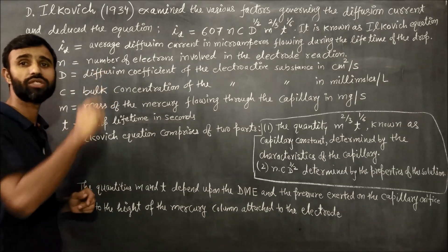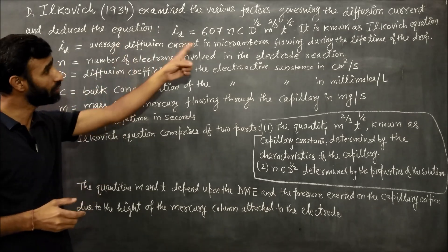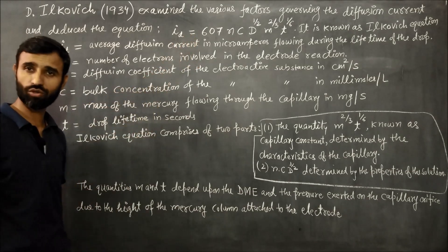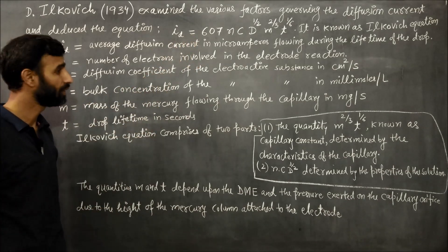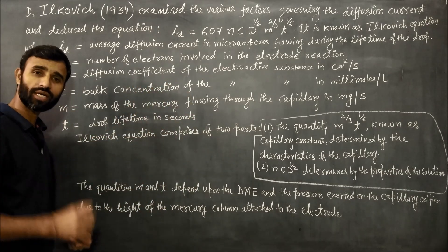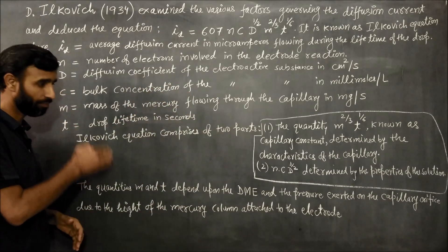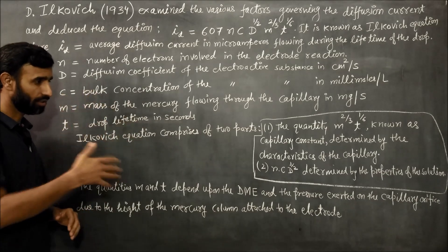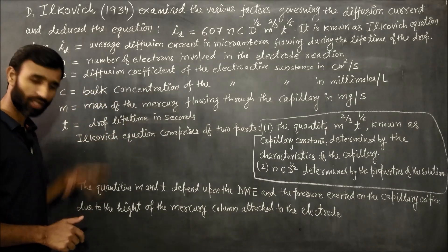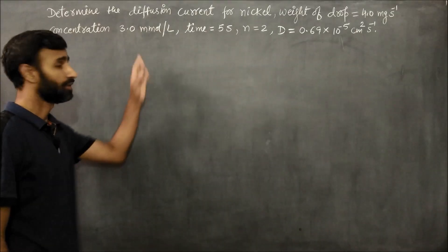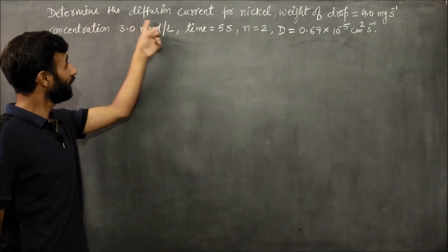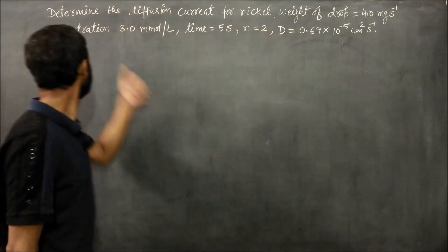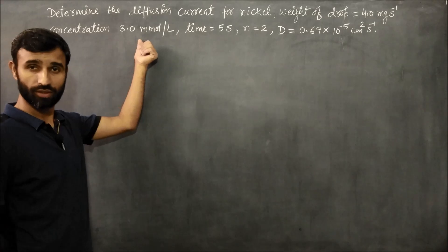The main thing in the Ilkovic equation is the units of each term. I repeat it — just take a snapshot and keep this with you. Now let us do one numerical related to the same. The question is: determine the diffusion current for nickel. The weight of the drop is given, the concentration of the electroactive species is given, and the drop lifetime in seconds is given.